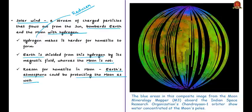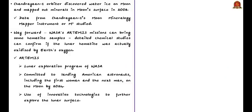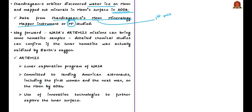From this finding and based on Chandrayaan-1's moon data, another major inference is that the moon's poles are home to water. Chandrayaan-1's orbiter had discovered water-ice on the moon and also mapped out a variety of minerals while surveying the moon's surface in 2008. The researcher studied the presence of water extensively in data from Chandrayaan-1's Moon Mineralogy Mapper instrument, known as M-cube or M³, which was built by NASA's Jet Propulsion Laboratory. Chandrayaan-1 is India's first mission to the moon, launched successfully by PSLV C-11 in 2008.